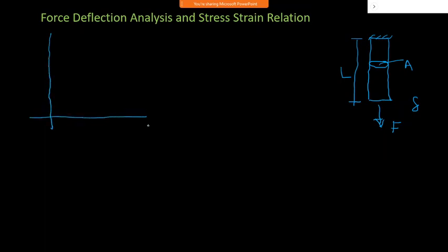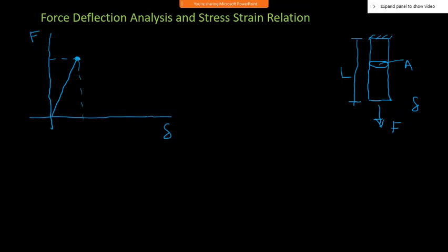In a UTM, we conduct a gradually increasing force test. As we go on increasing the force we get a force-deflection curve with certain points. As we increase the force, the curve follows a certain line up to a particular point called the elastic limit.